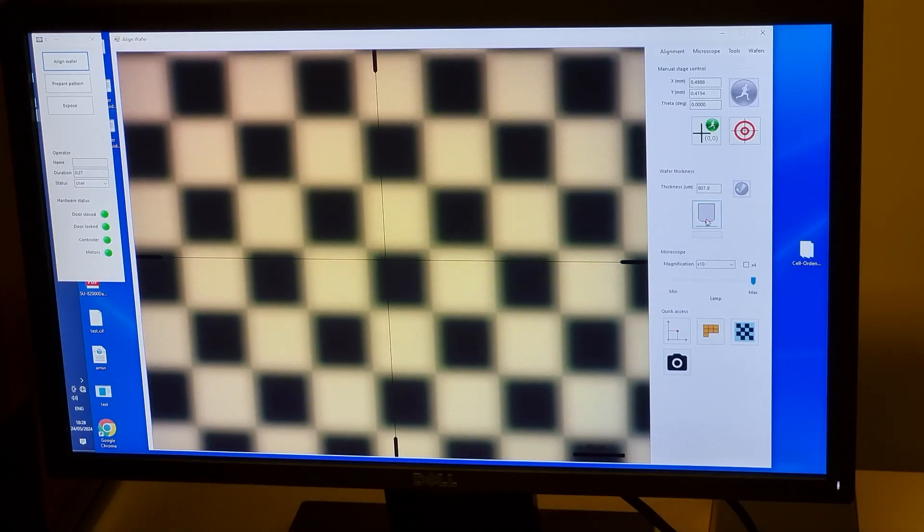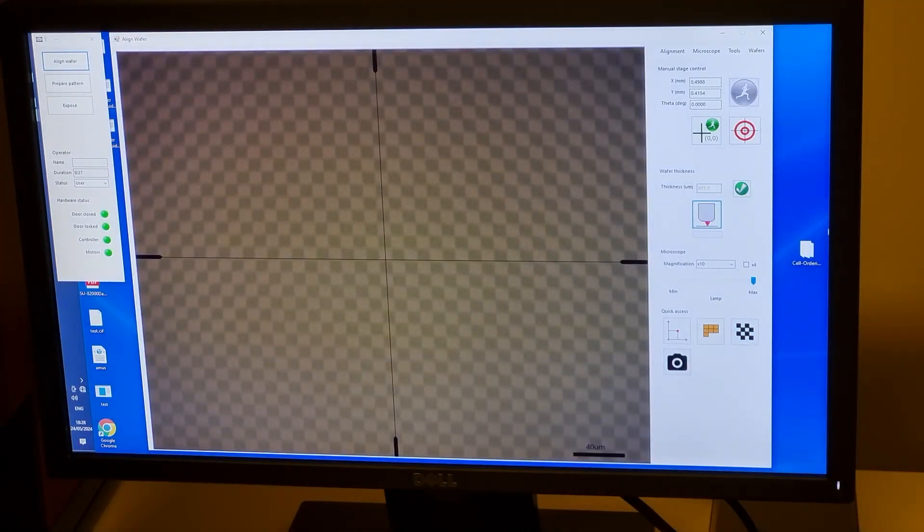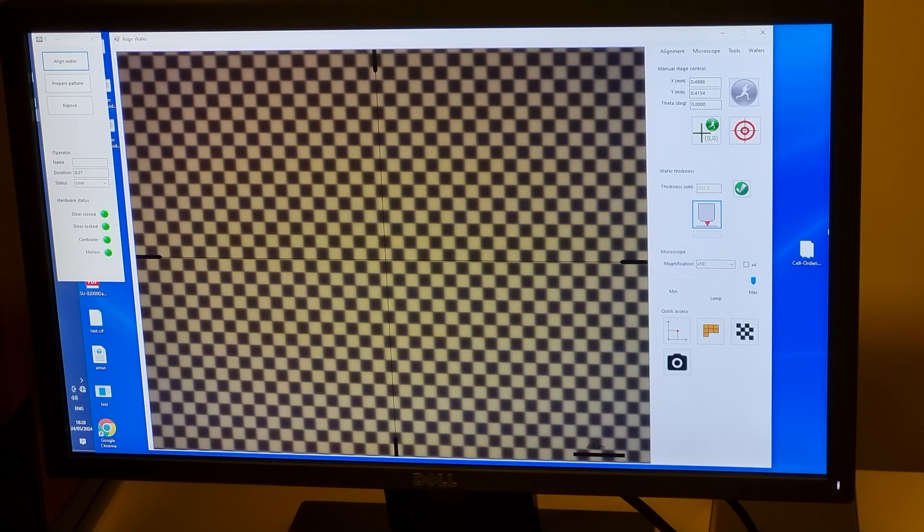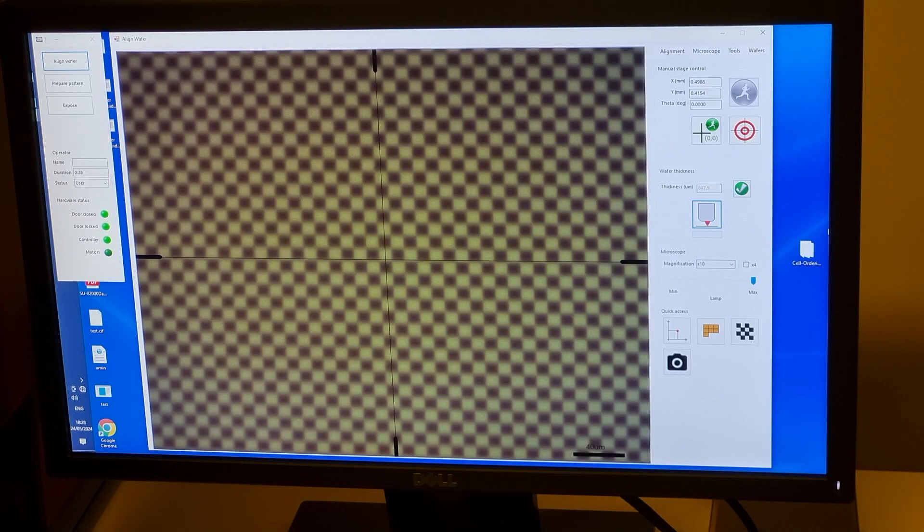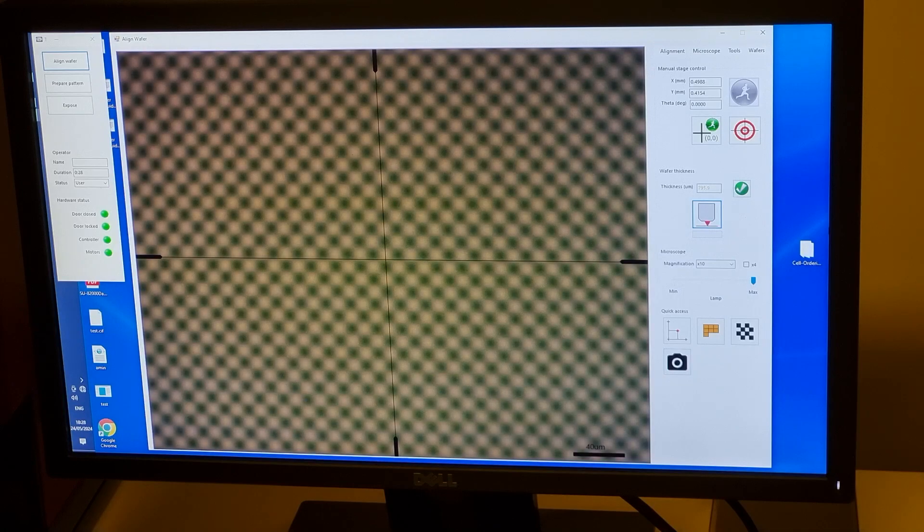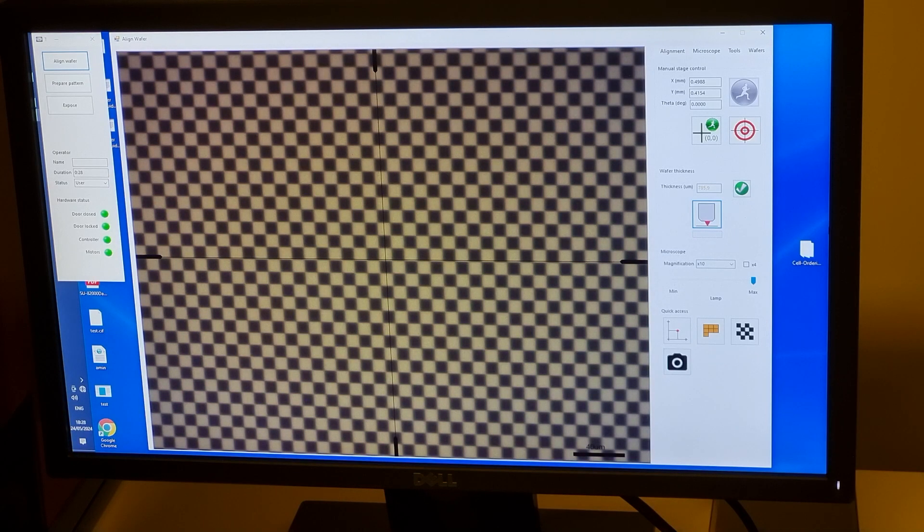The software requires you to do an autofocus step. The button just below the wafer thickness box with a red triangle in it will start the autofocus procedure. If you have a thick film, a transparent substrate like a glass slide, or a highly reflective film, you need to think carefully about which surface the microscope is actually focusing on, as it can focus on any reflective surface, including the top of the resist and the bottom of the glass slide.